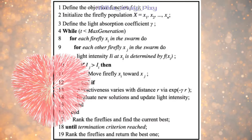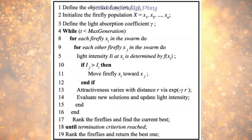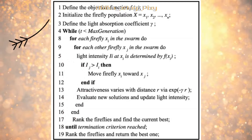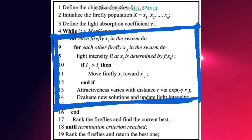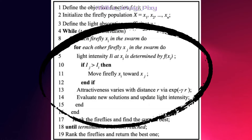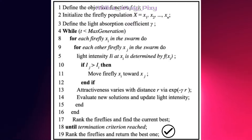The simple steps followed in this algorithm are: define the objective function, initialize the population, define gamma, then start the main loop. In the loop we update each firefly's position in the search space based on light intensity and attractiveness values, evaluate the new solution, rank the fireflies, and find the best solution. Repeat until the stopping criteria is met, then return the best solution.